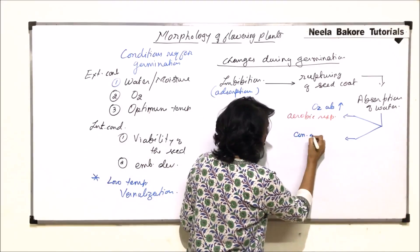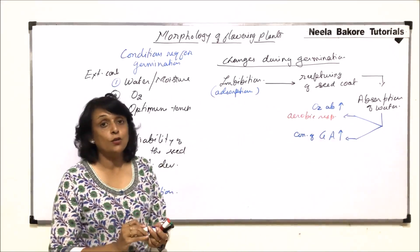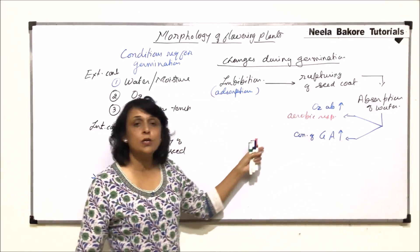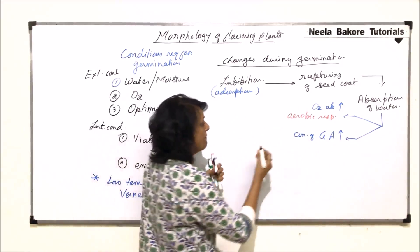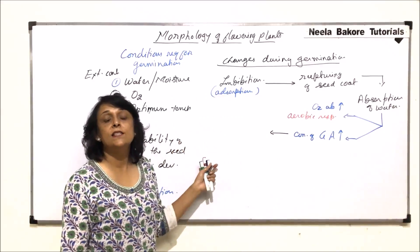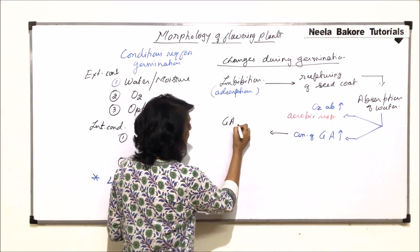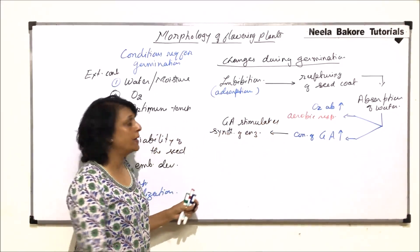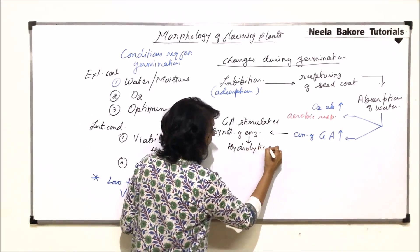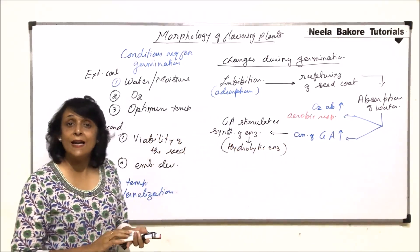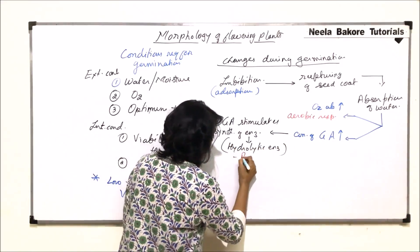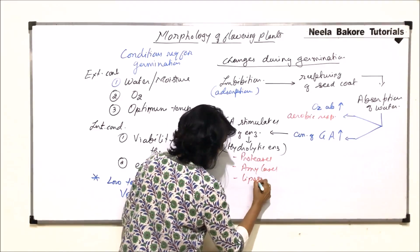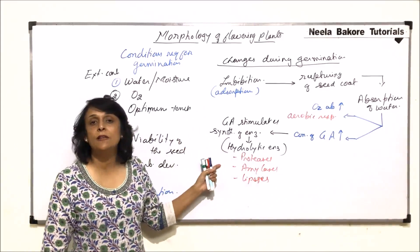The second change triggered by hydration is that the concentration of gibberellic acid also increases. So two things happen simultaneously: oxygen absorption increases, and gibberellic acid concentration increases. When gibberellic acid concentration increases, it stimulates the synthesis of hydrolytic enzymes — enzymes which are going to digest the reserved food material. These enzymes can be proteases, amylases, or lipases.